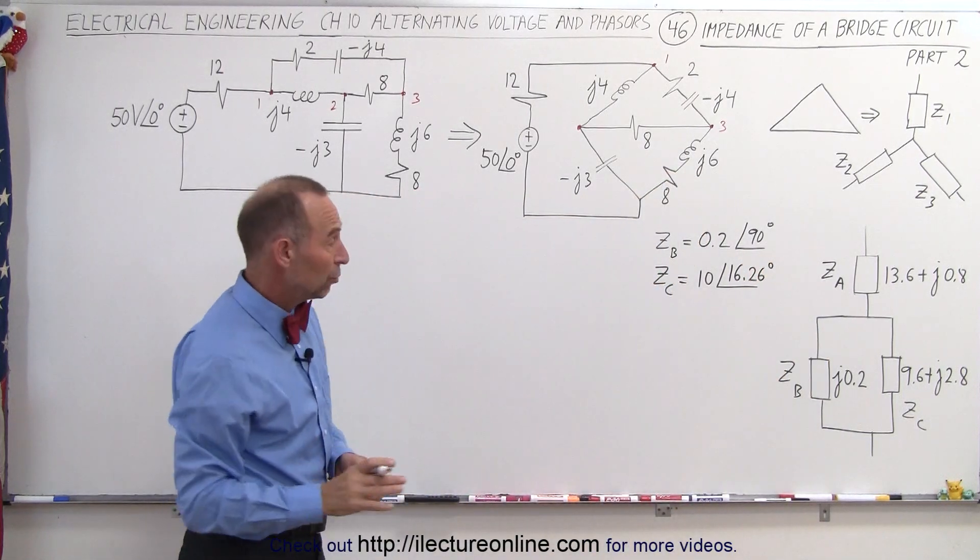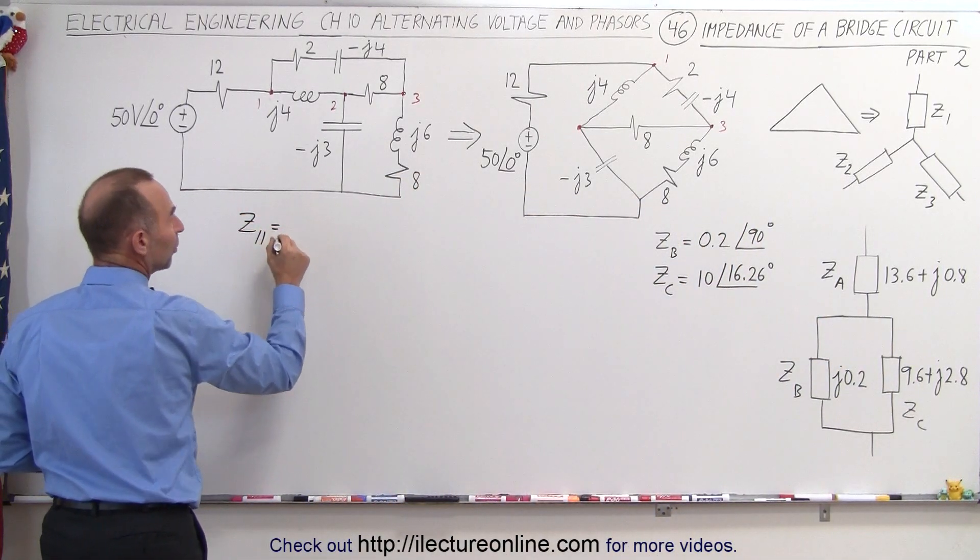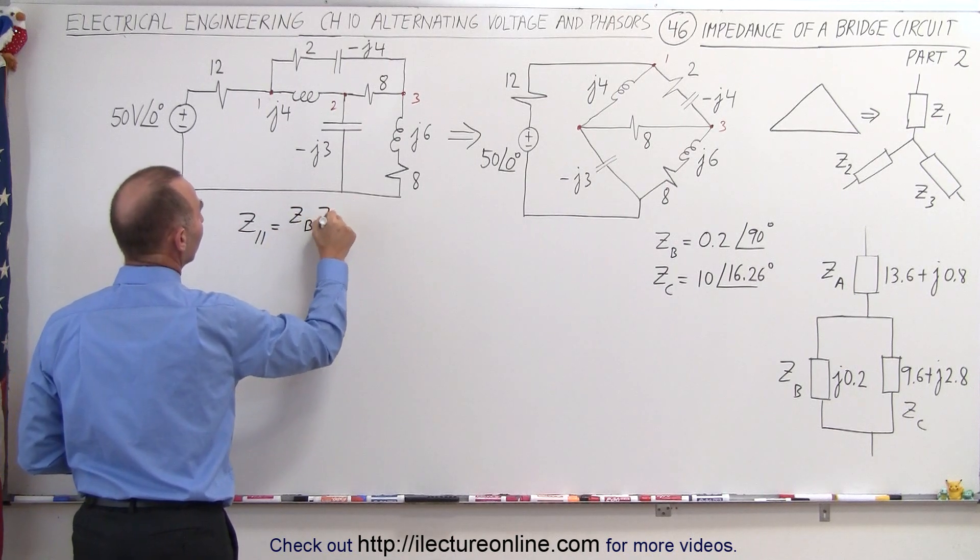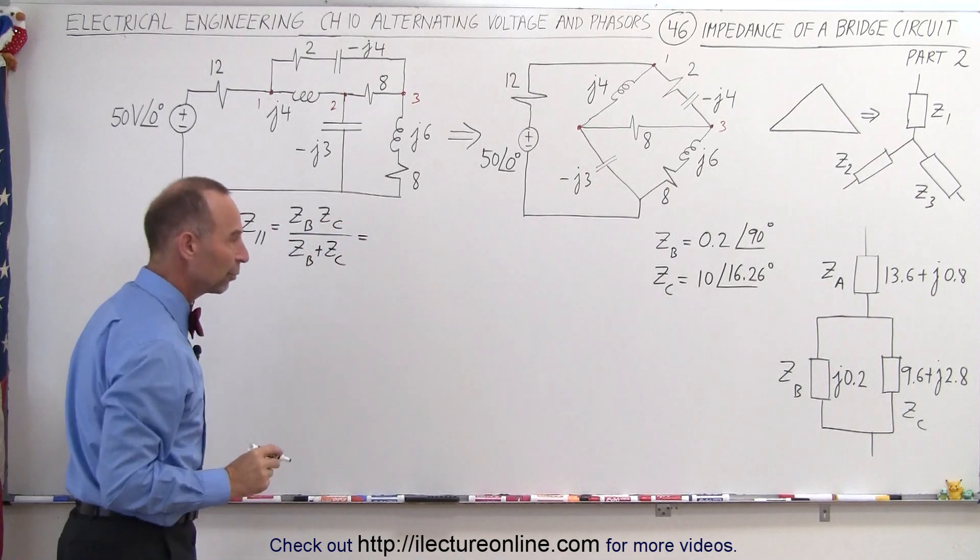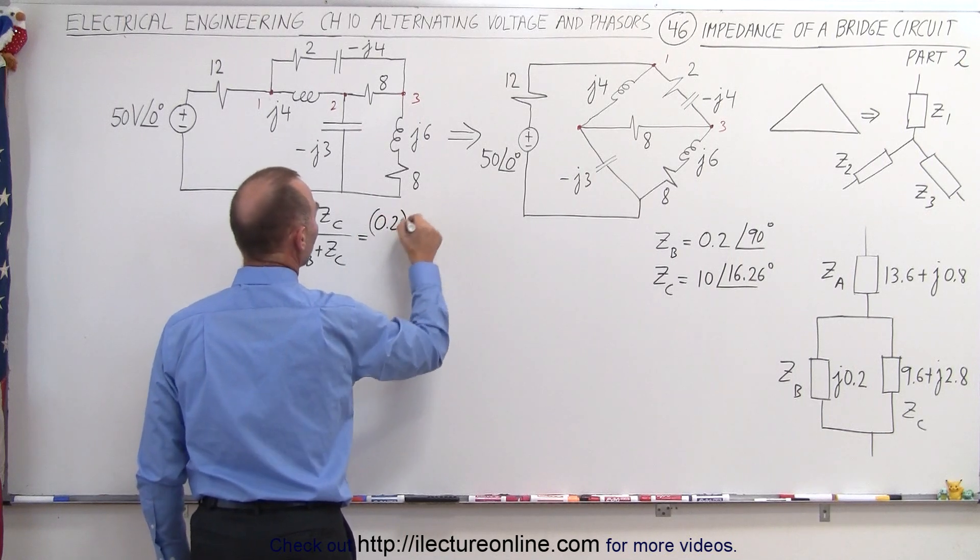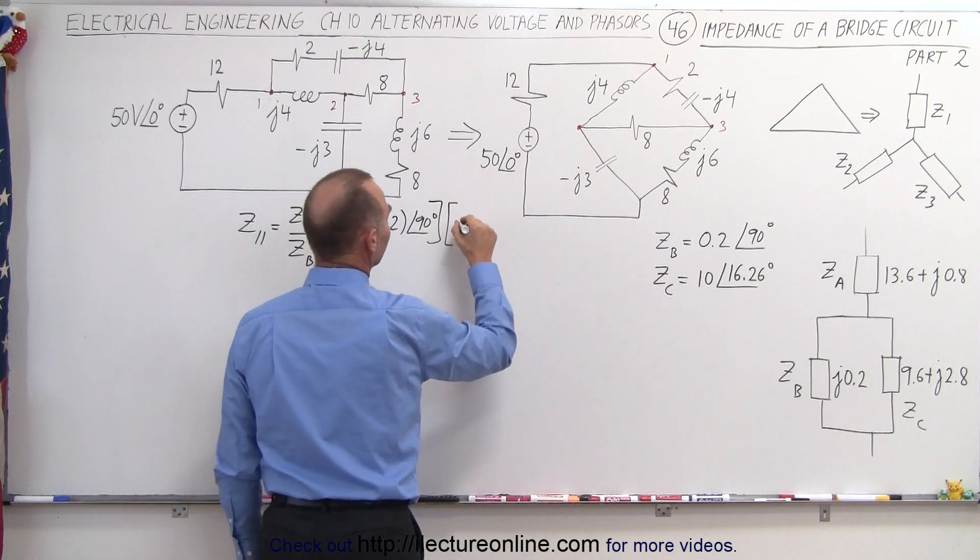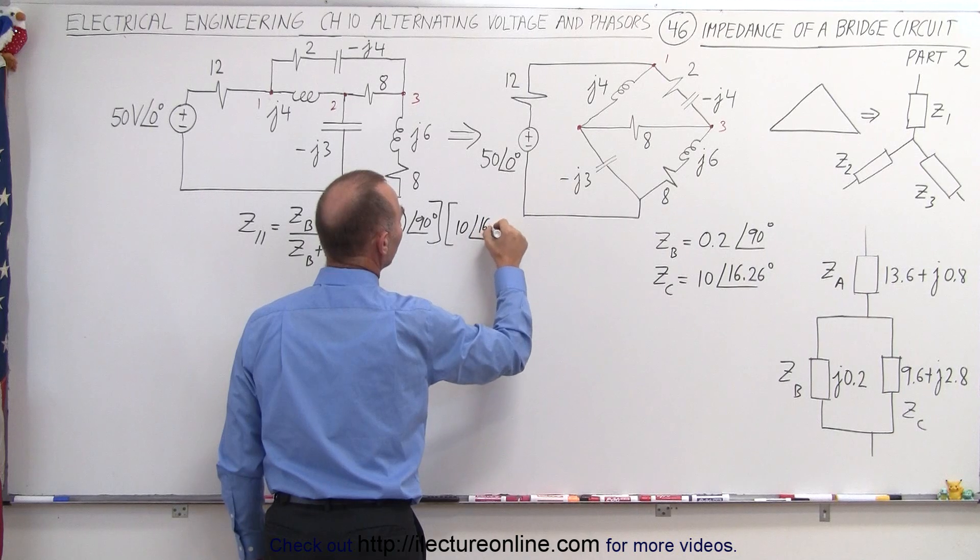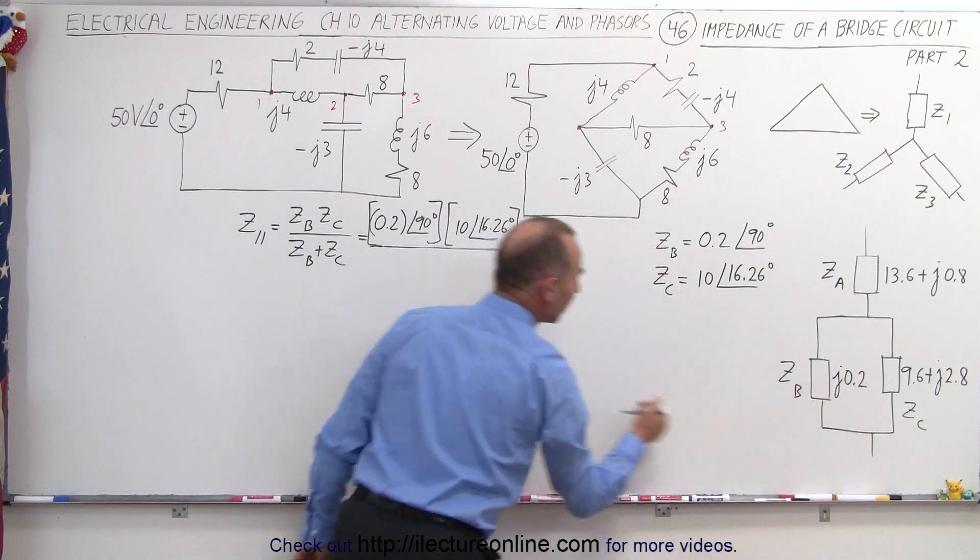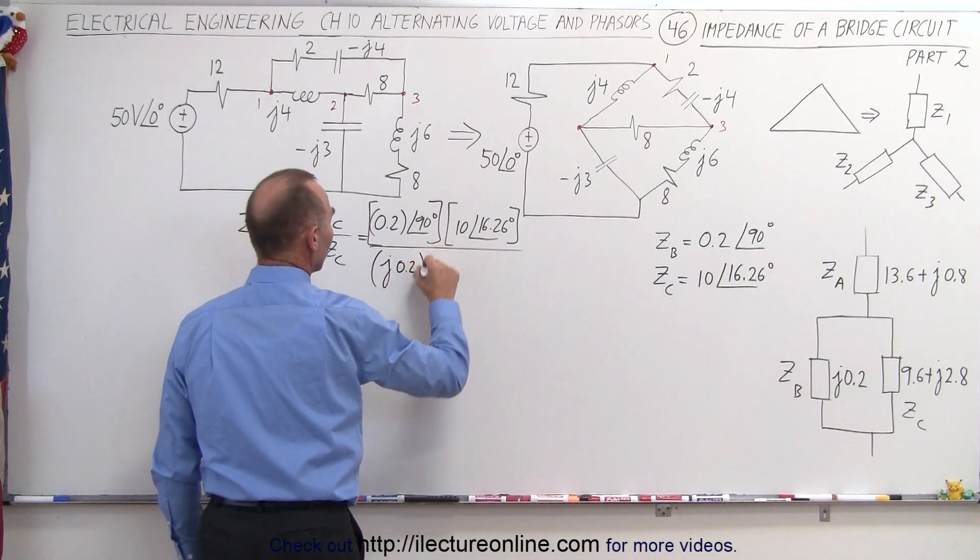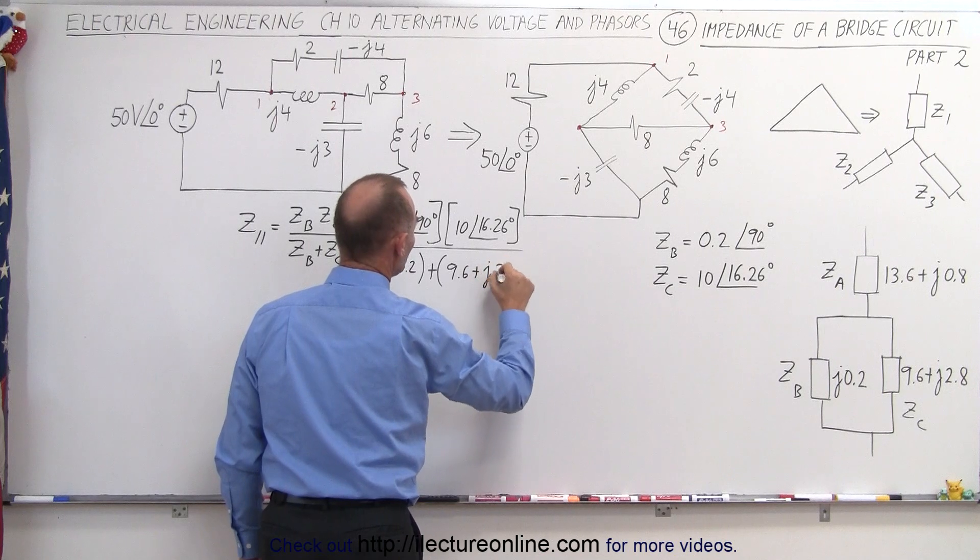Now we're ready to find the equivalent impedance of that parallel branch. So Z parallel, which would be equal to ZB times ZC divided by ZB plus ZC. So first we multiply, so we get 0.2 with a phase angle of 90 degrees, and we multiply that times 10 with a phase angle of 16.26 degrees. And then we divide that by the sum of the two, which we can put into this format. That would be j0.2, and we add that to 9.6 plus j2.8.